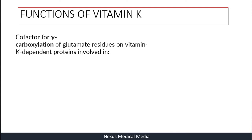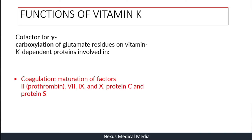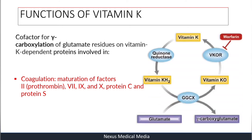Functions of Vitamin K: Vitamin K acts as a co-factor or co-enzyme for gamma-carboxylation of glutamate residues on Vitamin K dependent proteins. First, it's involved in coagulation — specifically the maturation of factors like Factor 2 (prothrombin), Factor 7, Factor 9, Factor 10, Protein C, and Protein S. These are the Vitamin K dependent clotting factors.